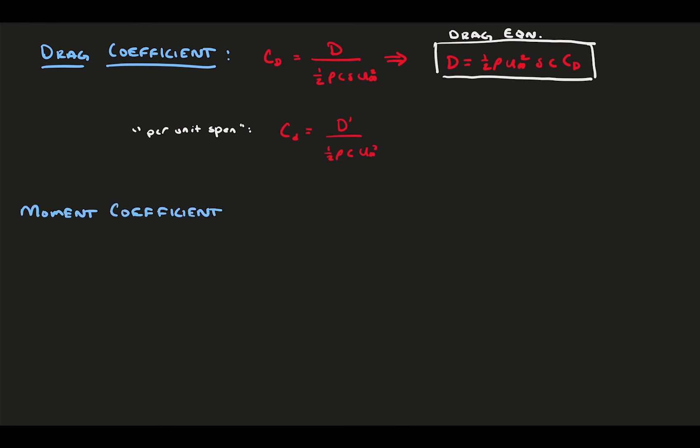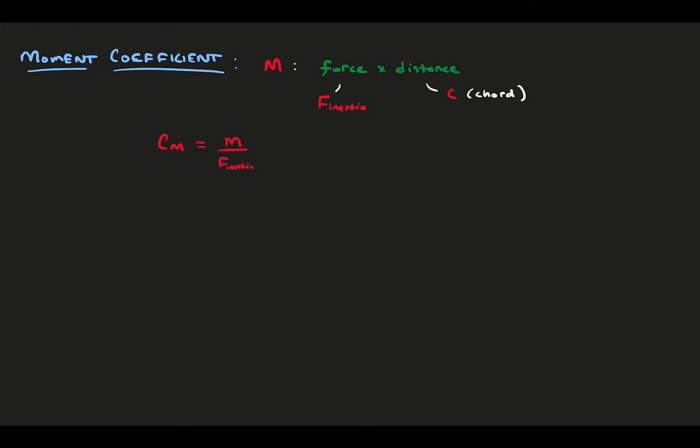Lastly, we have the moment coefficient. This is slightly different because moment is force times distance. So, we need to consider our inertial reference force and an additional length scale reference. Because the moment is usually due to forces on the chord line, some distance along the chord away from the moment location, it makes sense we use the chord as our reference. And, if we do it out, we get the moment equation, which is the same as the drag and lift equations with the additional chord in there. And, for completeness, we will also write out the moment per unit span.